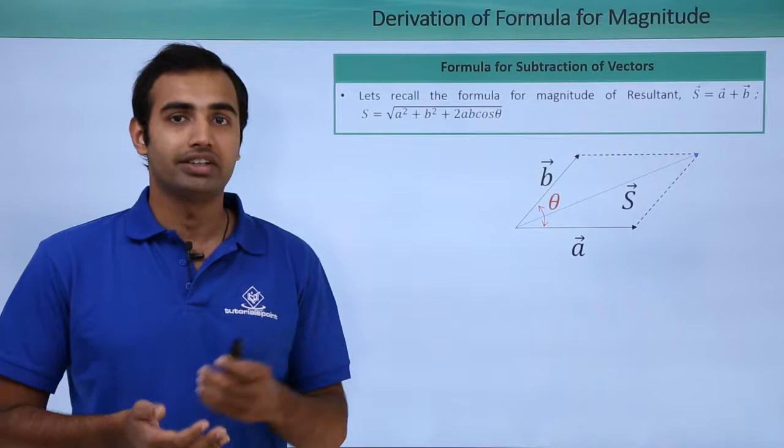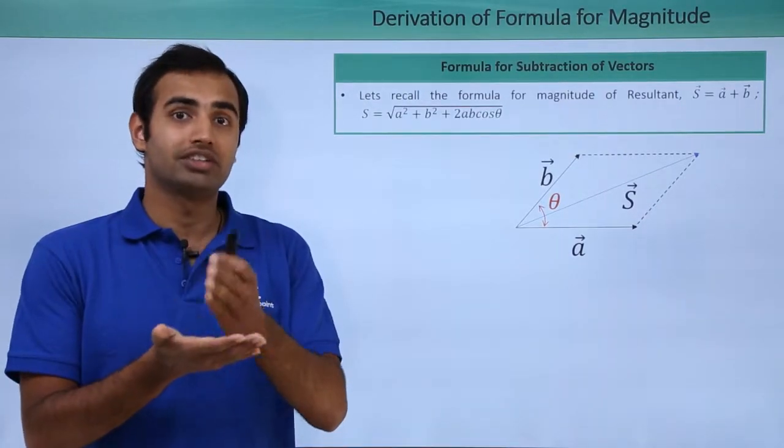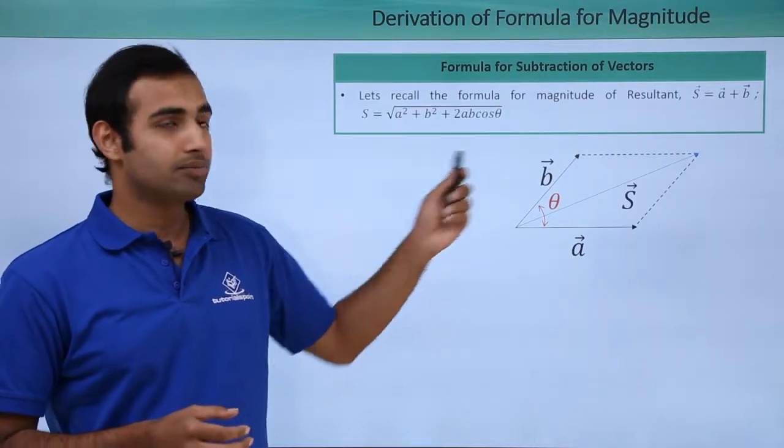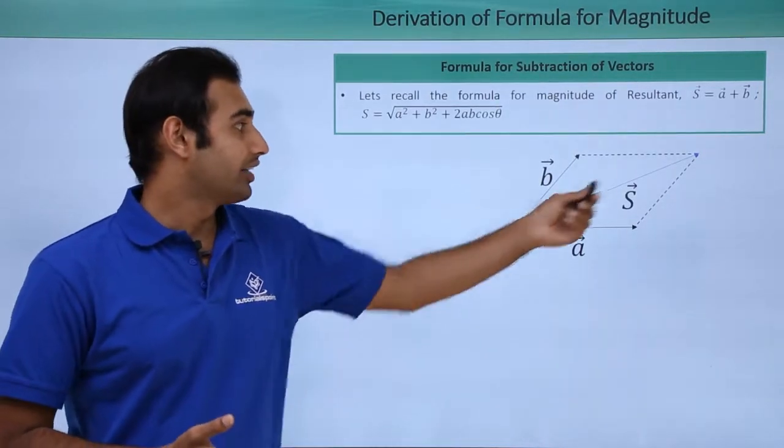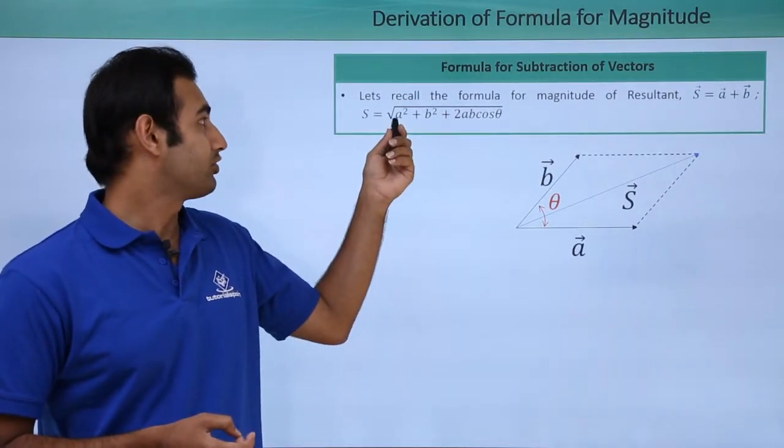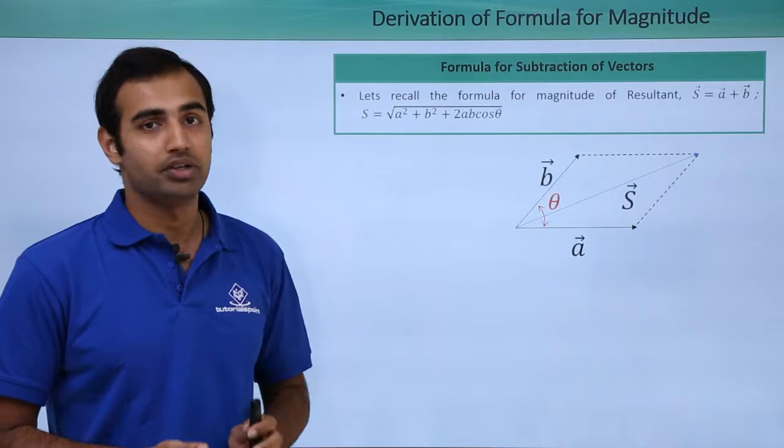In order to find that, let's recall the formula for the magnitude of resultant that comes out of addition. So if I have two vectors a and b that I add, I get an s vector as my resultant and the magnitude of this s vector is nothing but square root of a² + b² + 2ab cos θ.